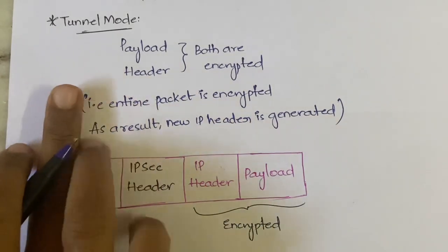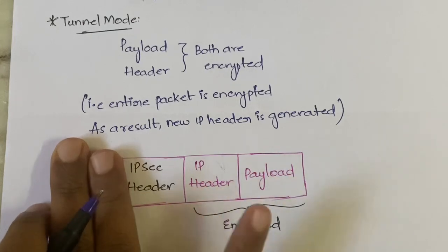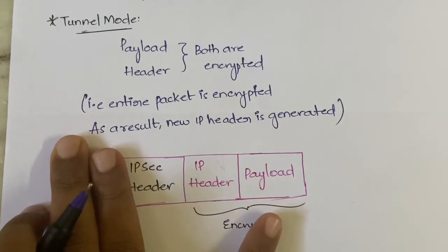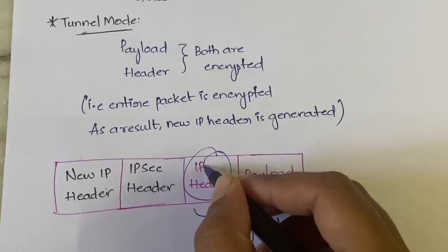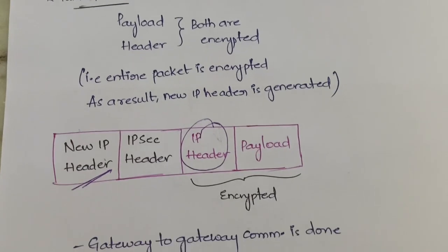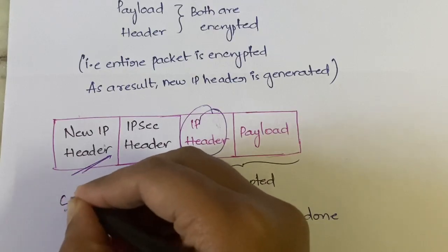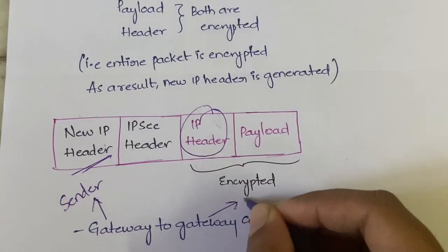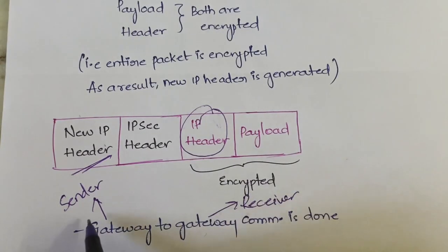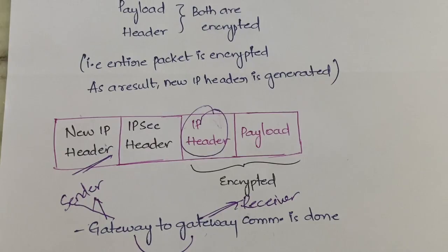In tunnel mode, since the IP header is encrypted, we have to request for another new IP header. In tunnel mode, gateway-to-gateway communication is done. One gateway is connected to the sender and another gateway is connected to the receiver. The sender sends data to its gateway, which forwards it through the other gateway, which then delivers it to the receiver.